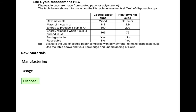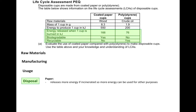For disposal there's a lot of information in the table: the energy released when one cup is burned and whether they're biodegradable or recyclable. For paper, it releases more energy if incinerated — 166 kilojoules — and this energy can be used for other purposes, such as generating electricity for homes. Paper is also biodegradable, so it will decompose and will not remain in landfill, which is a positive.